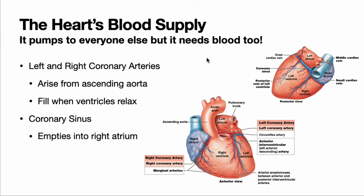The heart is a muscle itself and it needs its own blood supply. It gets its blood supply from the left and right coronary arteries, which you can see in this view of the heart where the pulmonary trunk has been removed. The right coronary artery gives rise to the marginal arteries that run along the margin of the heart, and the left coronary artery gives rise to the circumflex and the anterior interventricular. They will only fill when the ventricles are relaxed because when the ventricles are contracting, it compresses the arteries and blood isn't able to flow through them. Any blockage of these arteries would prevent oxygen from reaching the heart muscle cells, and that could lead to ischemia or potentially cardiac arrest.